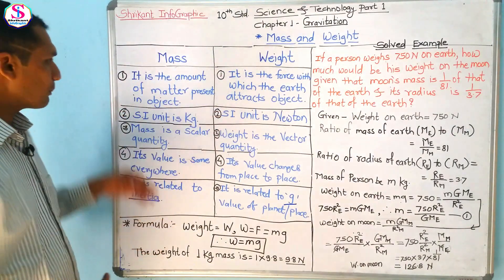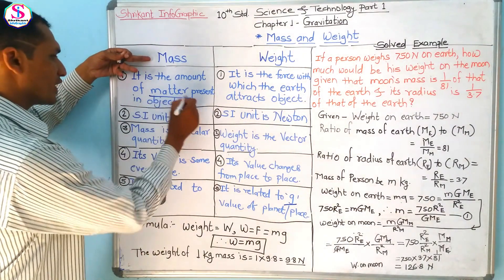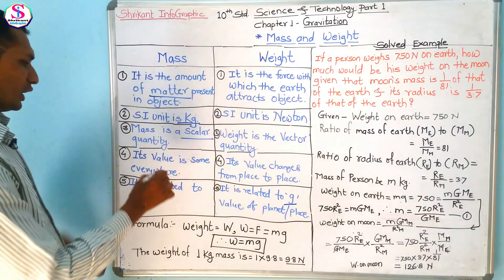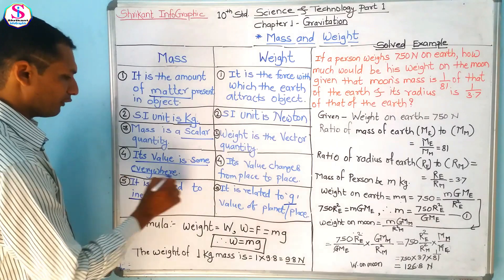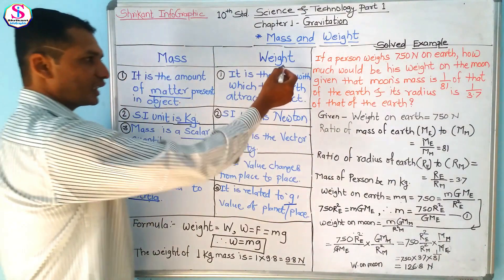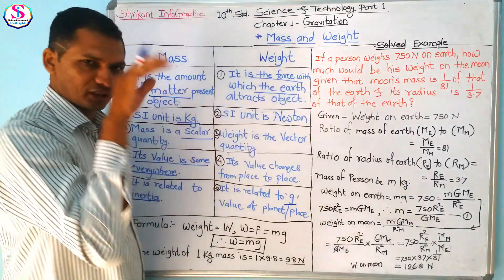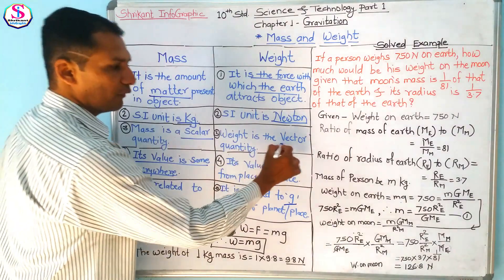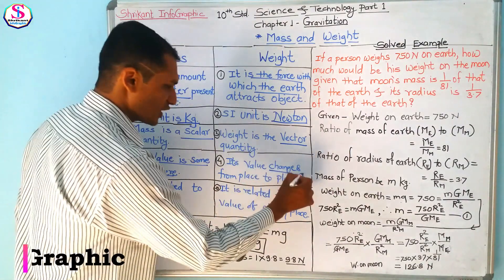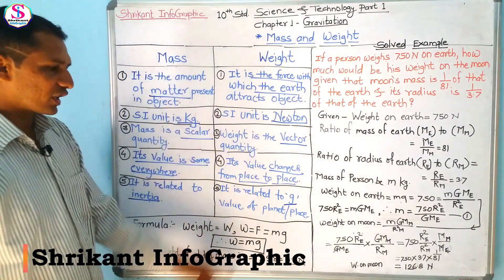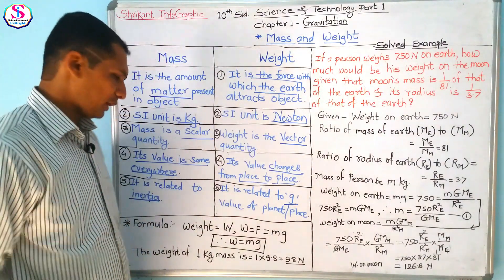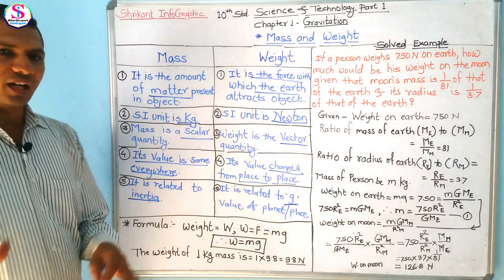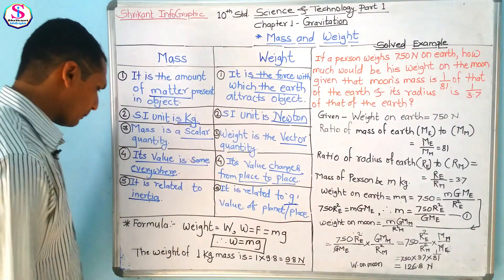To summarize: mass is related to the matter present in an object, has the unit kilogram, is a scalar quantity, its value is the same everywhere, and it is related to inertia. Whereas weight is the force applied by the earth on the object, has the unit Newton, is a vector quantity, its value changes from place to place, and it is related to the gravitational acceleration of that planet.